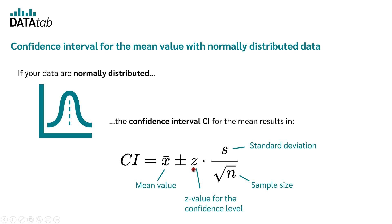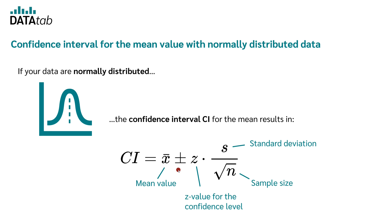Plus minus results from the fact that we have once the upper limit with plus and once the lower limit with minus.